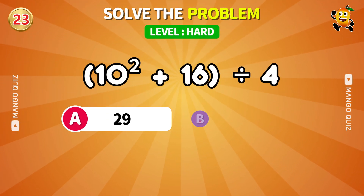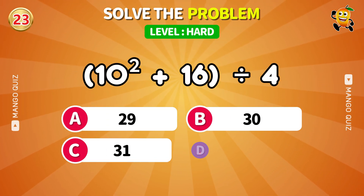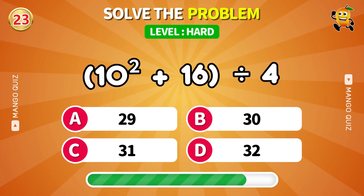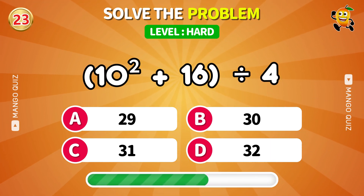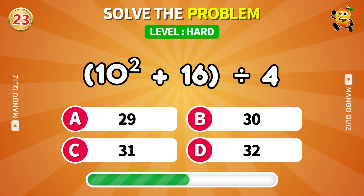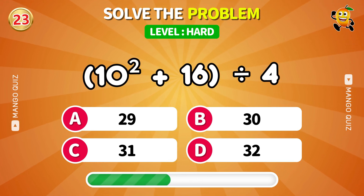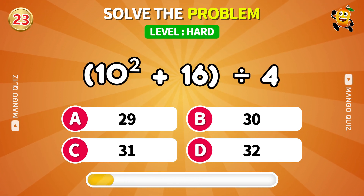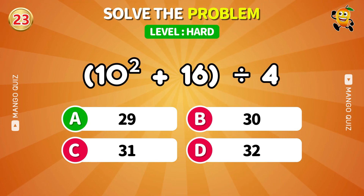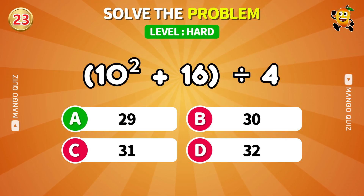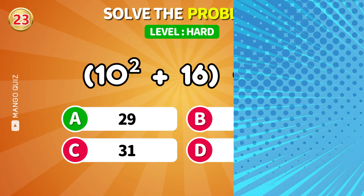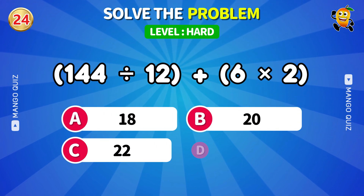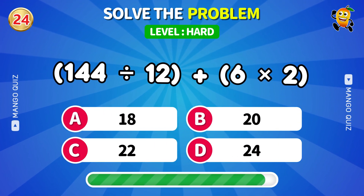10 squared plus 16 then divide by 4. Answer: 29. Next: divide 144 by 12 then add 6 times 2. Answer: 24.